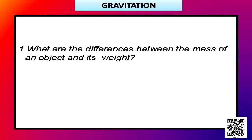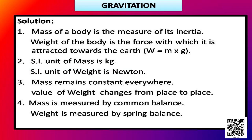Let us discuss the question: what are the differences between the mass of an object and its weight? We can differentiate between mass and weight using four properties. Mass of a body is the measure of its inertia, whereas weight of the body is the force with which it is attracted towards the earth — that is why W = mass × acceleration due to gravity. The SI unit of mass is kilogram and that of weight is newton.